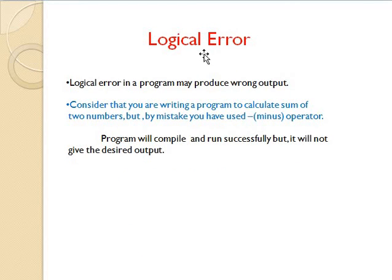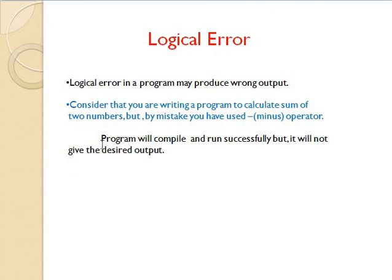The next type of error is the logical error. The logical error in a program may produce wrong output. Consider that you are writing a program to calculate the addition of two numbers, but by mistake you have used the minus operator instead of the plus operator. Then your program will compile and run successfully, but it will not give the desired output. Instead, it will produce the wrong output.